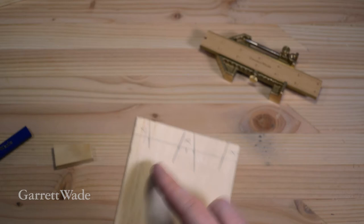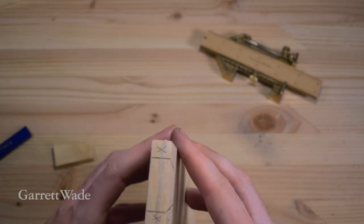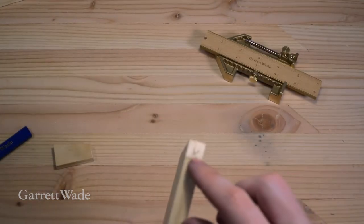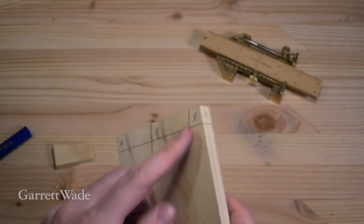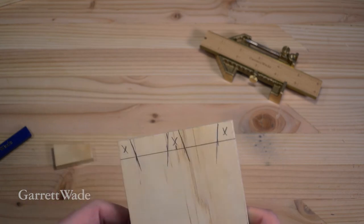So now my tails are marked out on both sides all around. I carried my lines across and I've put an X on all the spots where I'm removing material to form my tails. So now it's time to cut these out.